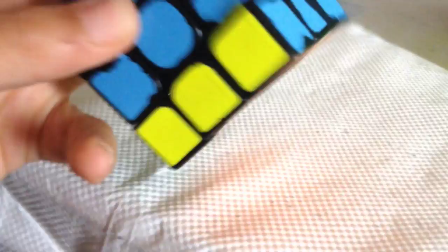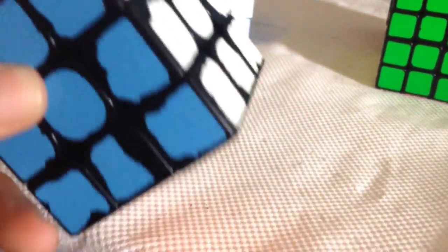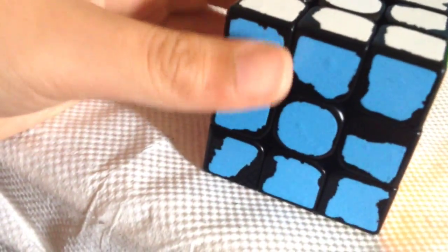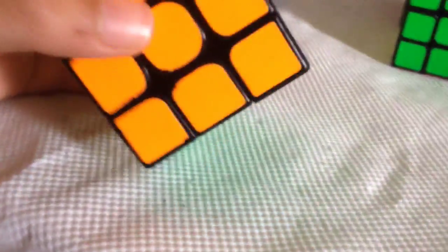Next cube, this is a Yushin 3x3. The stickers are really peeled because I've had this for about a year. This used to be a Cubicle Premium cube, but the lube worn out, so I had to clean it out and put in some new lube.